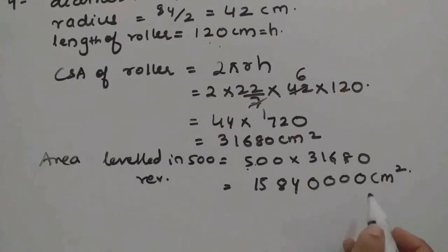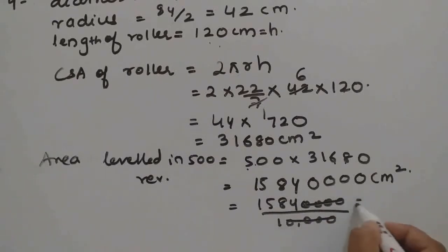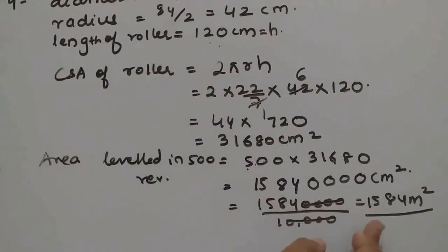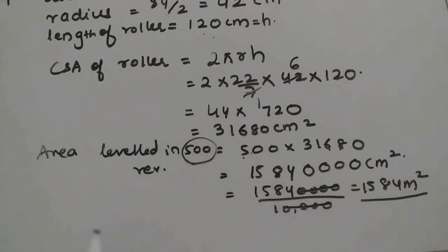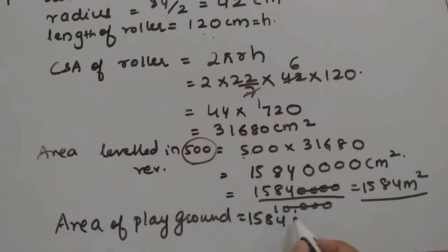Now if we want to convert this into meter square, we divide by 10,000. So the 4 zeros cancel out. This gives us the area in meter square for 500 revolutions, which is nothing but the area of the playground, because to level the playground we need 500 revolutions. So area of playground is equal to 1584 meter square.